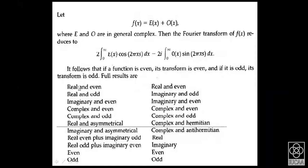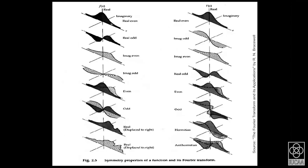From these properties: if you have a real and even function, the Fourier transform is real and even. If you have a real and odd function, the transform is imaginary and odd. There are a variety of possibilities. The one most often encountered is the sky distribution, which is real and asymmetric — its Fourier description is complex and Hermitian symmetric. Hermitian symmetry means the value at a diametrically opposite location is the complex conjugate of the value at the corresponding positive side.